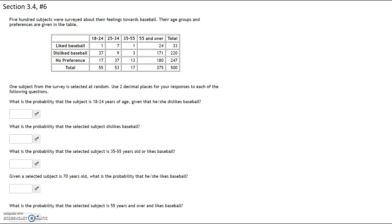What that means is we're only going to be choosing from the group that likes or dislikes baseball. Anytime you have a 'given,' that becomes your denominator. So let's take a look at the row that dislikes baseball — that's a total of 220 people, and that will be your denominator.